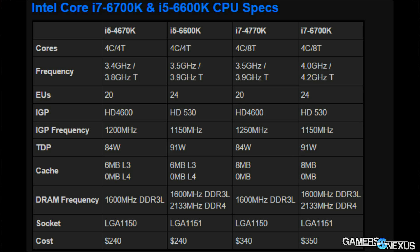Let's go through the specs of the i7-6700K and i5-6600K before we get into the gaming benchmarks. The core and thread count is the same as previously: four cores and eight threads for the 6700K — meaning it is hyper-threaded — and the 6600K has four cores and four threads, so it is not hyper-threaded. The 6700K is clocked at 4 GHz and the 6600K at 3.5 GHz. Pretty familiar to the 4770 and 4670. The X90 Devil's Canyon versions were clocked a little higher, so there's less of a difference between Skylake and DC than between Skylake and Haswell.